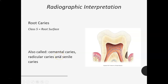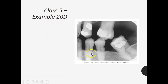Root caries is the last classification and that's Class 5 — it's down below the enamel on the cementum, and usually occurs when there's recession. Root caries is often seen in the older population, especially if they have a lot of recession, dry mouth, and difficulty cleaning due to dexterity issues. Root caries or Class 5 is along the cervical portion — the neck of the tooth — also called cemental caries, radicular caries, or senile caries. Here's a Class 5 example on the distal of tooth 20 — you can see it's pretty notched out.